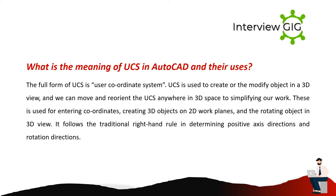What is the meaning of UCS in AutoCAD and its uses? The full form of UCS is User Coordinate System. UCS is used to create or modify objects in a 3D view, and we can move and reorient the UCS anywhere in 3D space to simplify our work. It is used for entering coordinates, creating 3D objects on 2D work planes, and rotating objects in 3D view. It follows the traditional right-hand rule in determining positive axis directions and rotation directions.